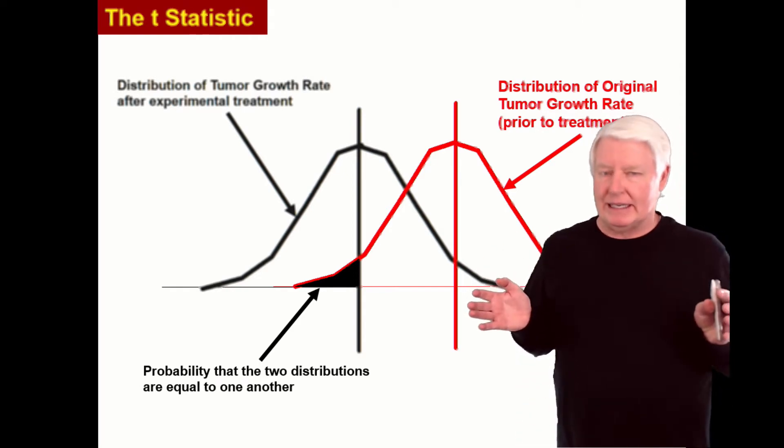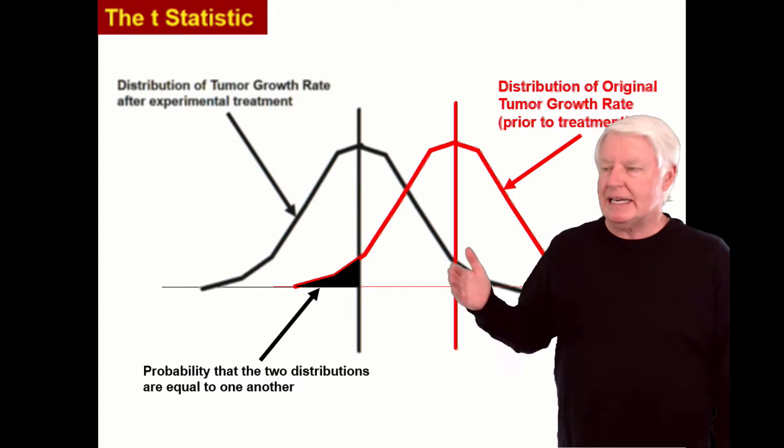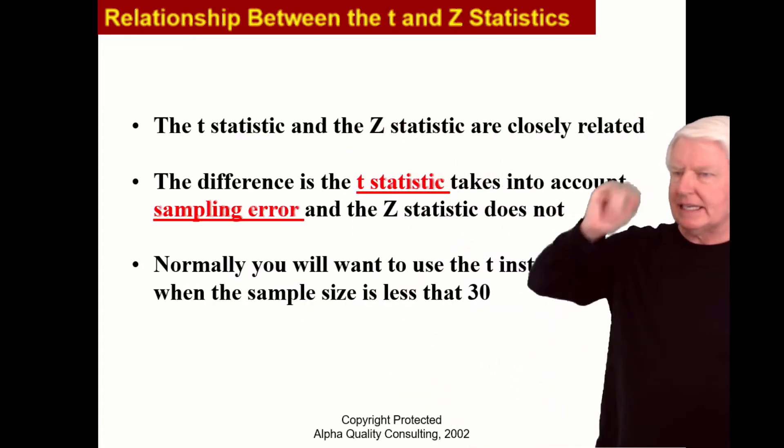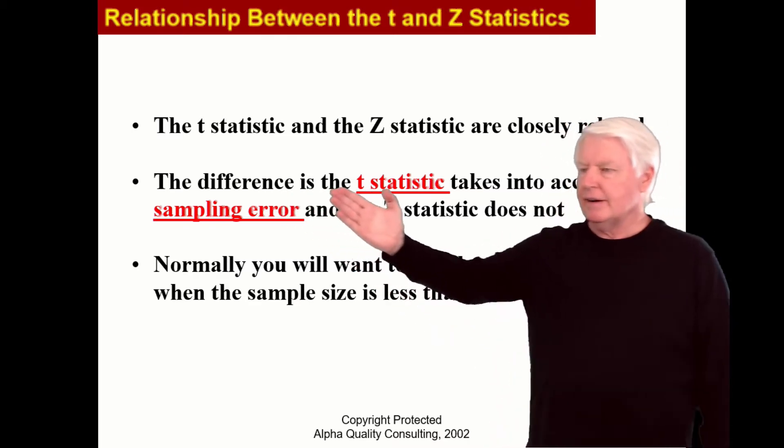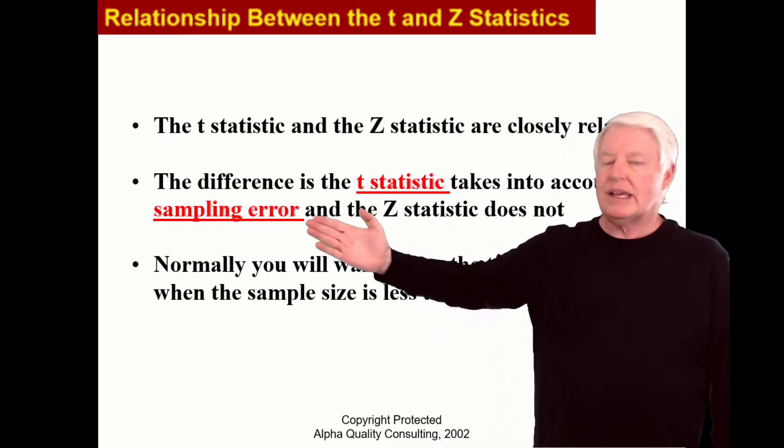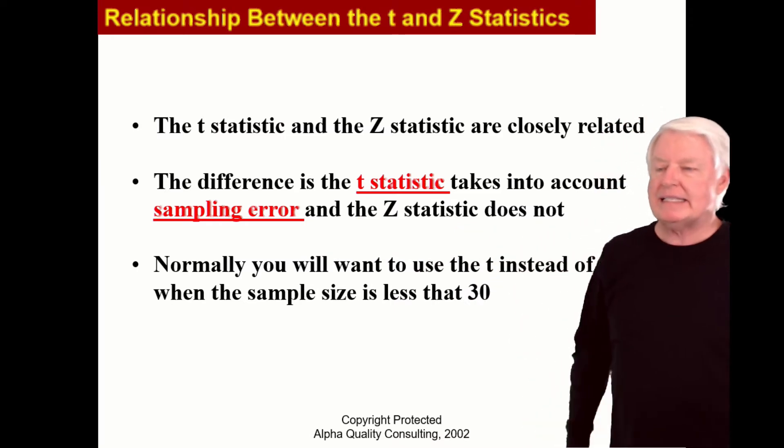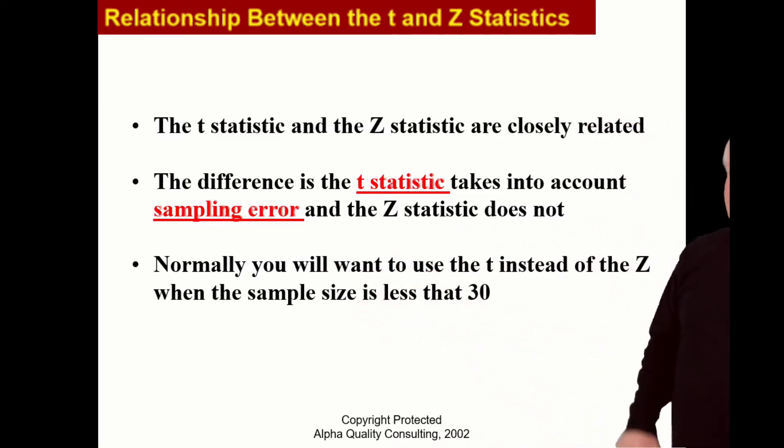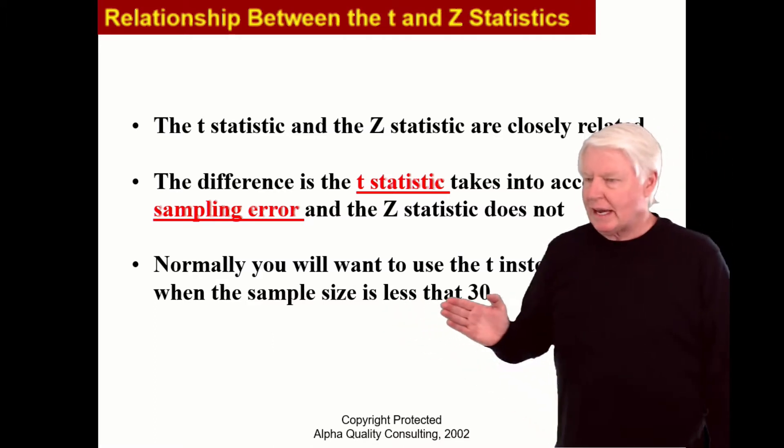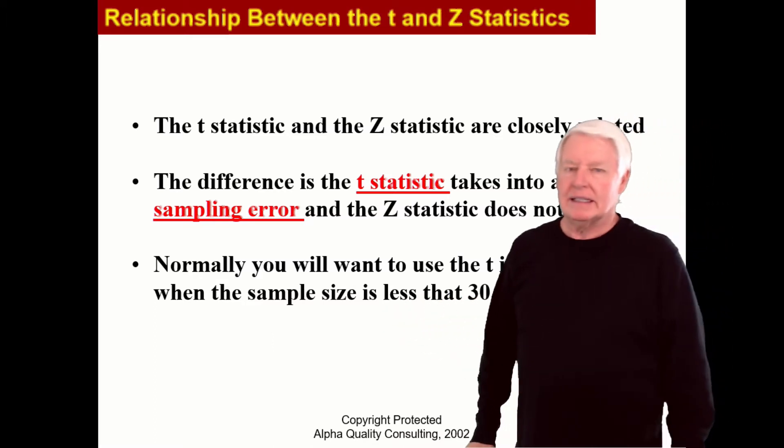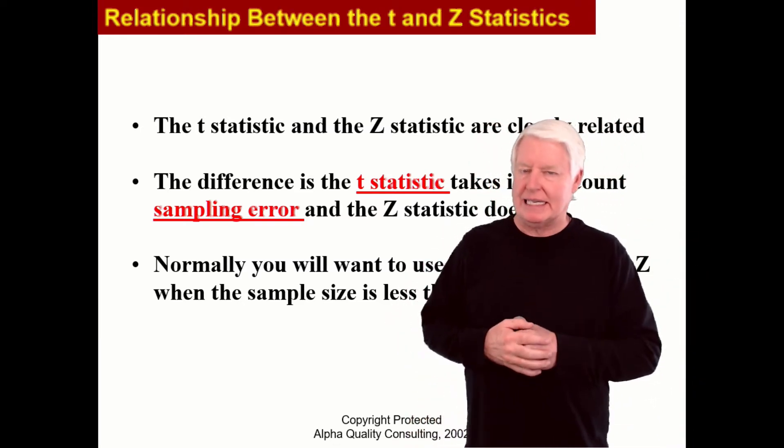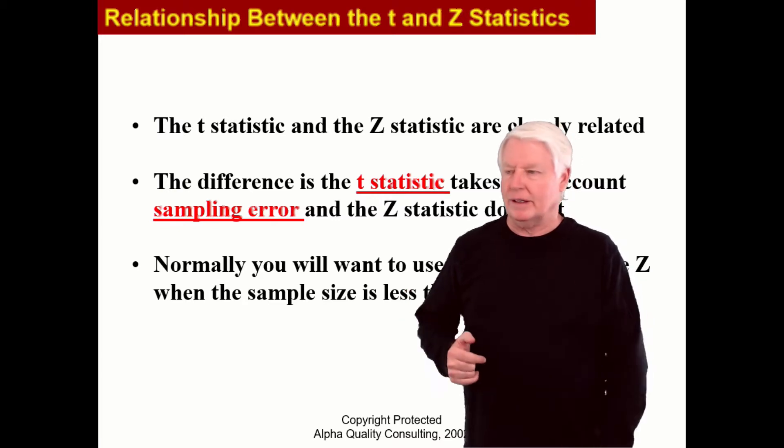So we're doing the same thing with the T-statistic. Z and T are pretty much the same. The difference is the T-statistic takes into account sampling error and the Z-statistic does not. Normally you will want to use the T instead of the Z when the sample size is less than 30. If it's 30 or greater, you can use the Z-statistic.